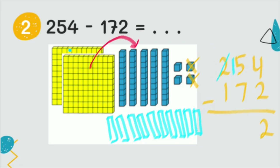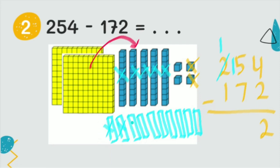How many hundreds do we have? One hundred, right. So we have one hundred. Now fifteen minus seven — we cross out seven tens. Counting: one through seven. We now have eight tens remaining.